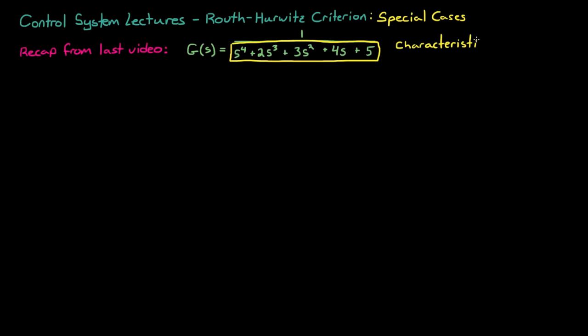Since this is a fourth order polynomial, you can set up the Routh array by starting with the first row at s to the fourth and ending with the last row at s to the zeroth, or five rows total.